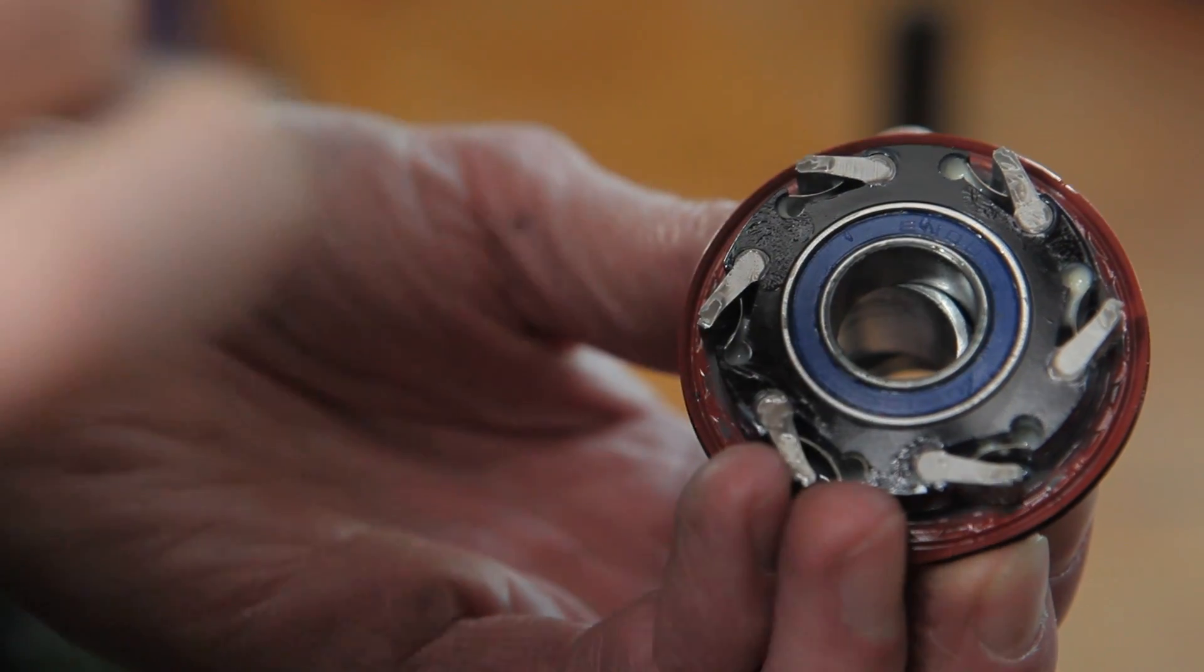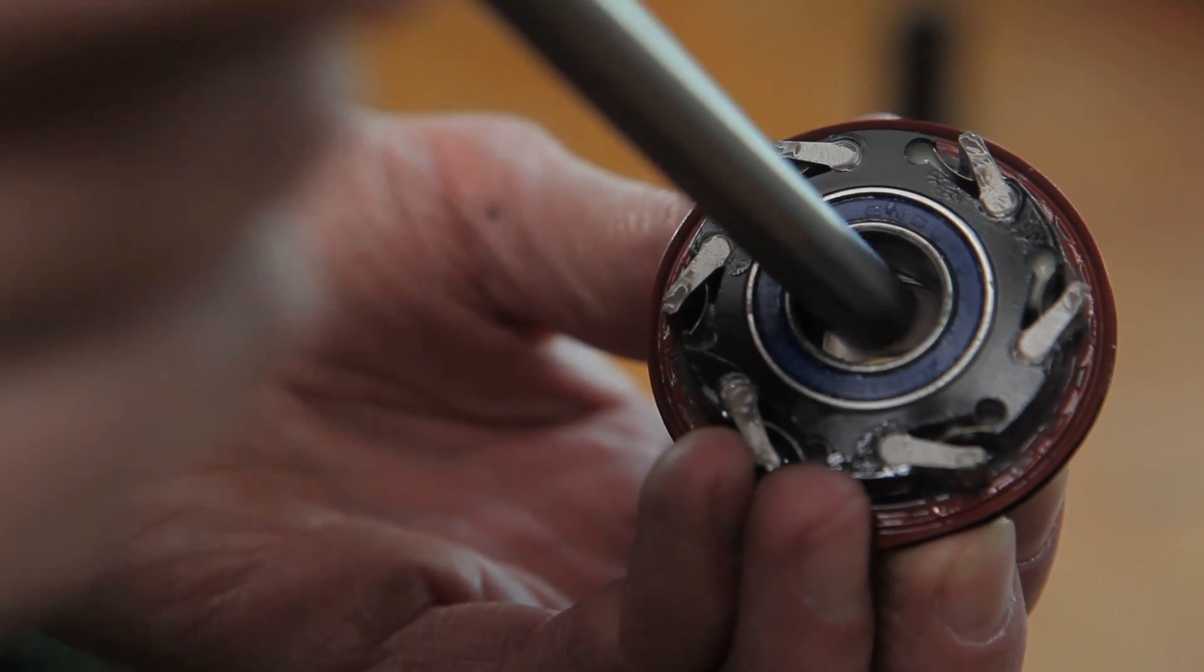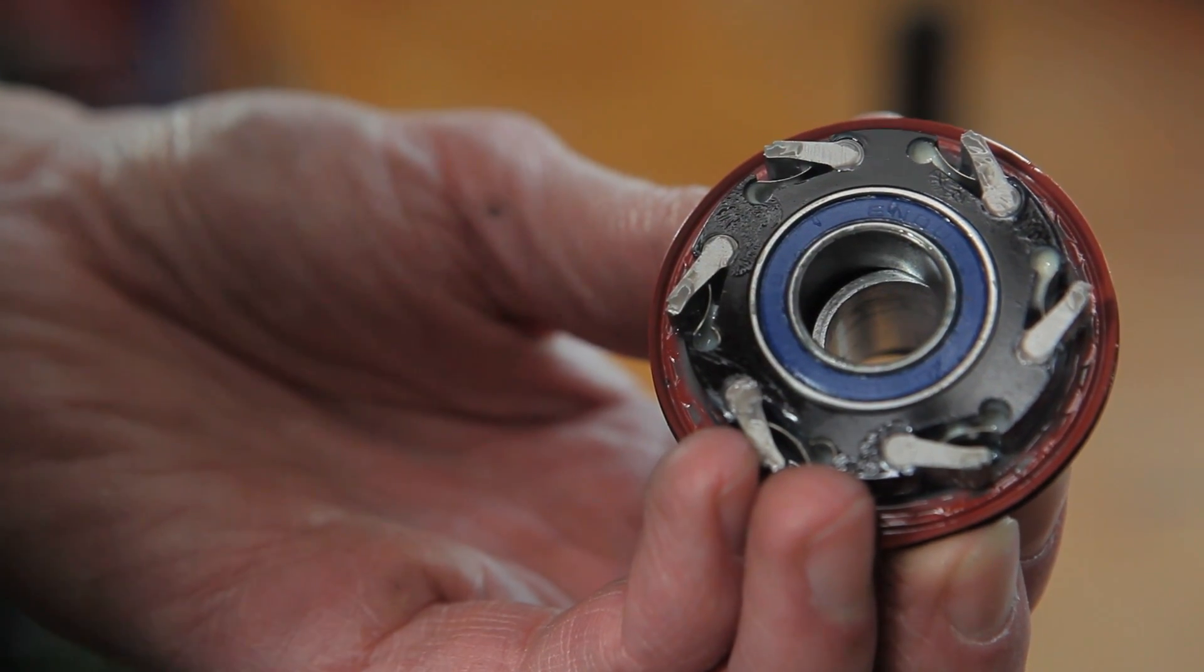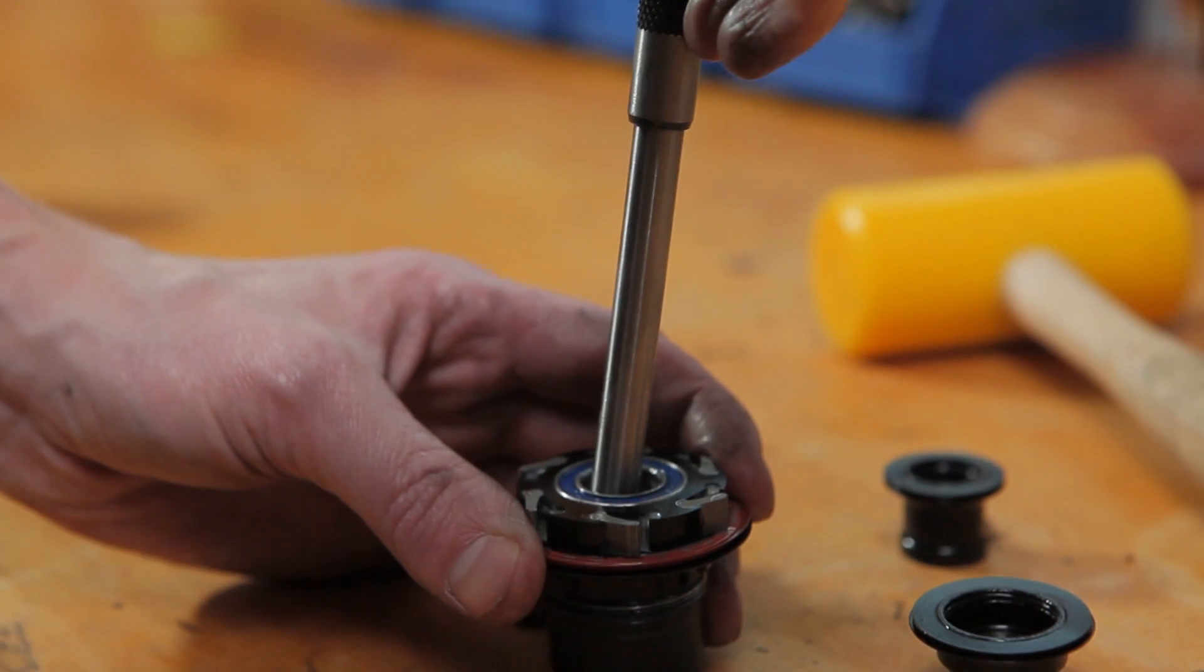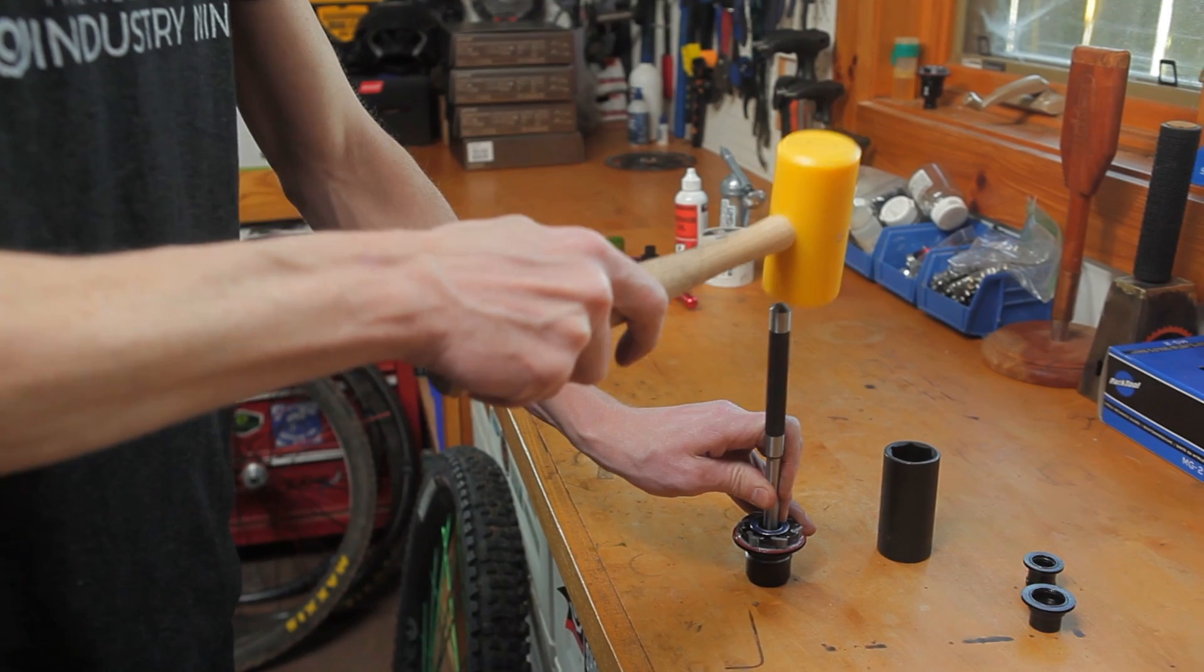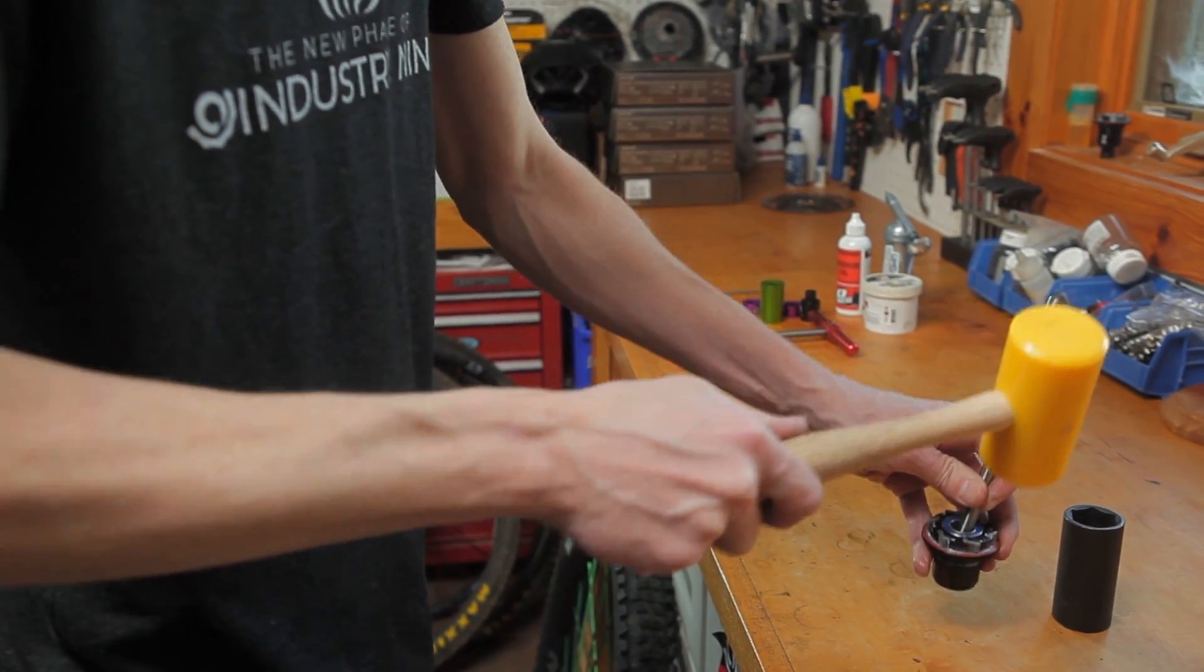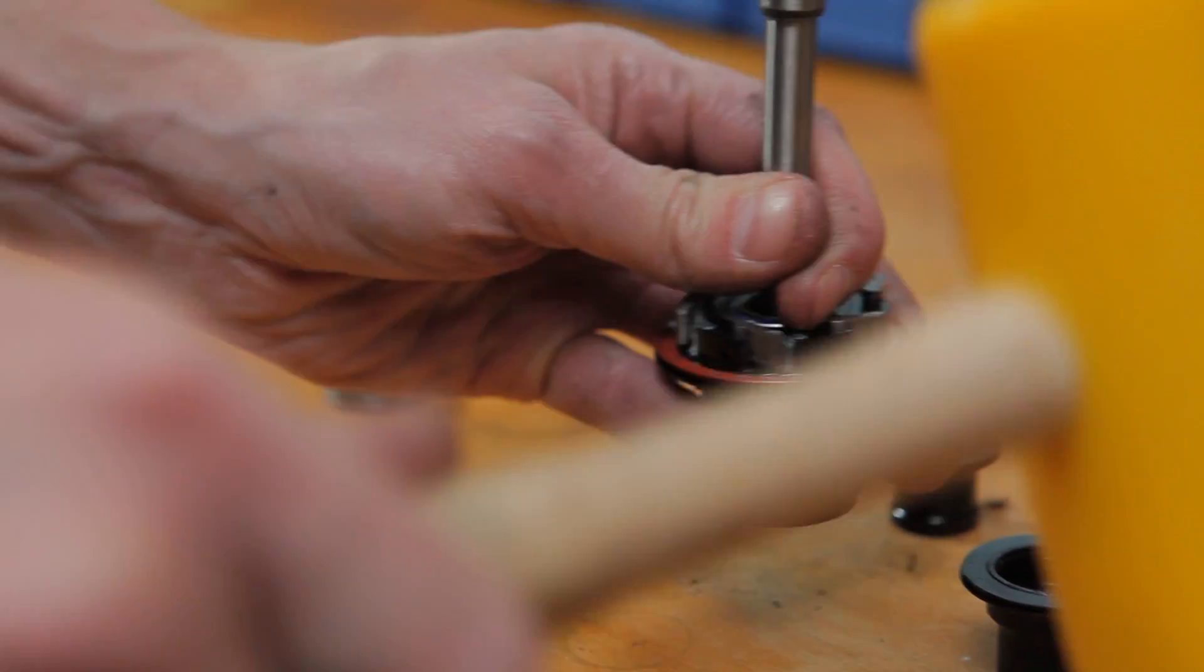You'll need a punch to remove the bearings in the freehub body. Start with the outboard bearing. Use the edge of the punch to offset the spacer in the freehub. Catch the revealed edge of the bearing with the punch. As always, move around the bearing with the punch so that you push it out as straight as possible. Once the outboard bearing is removed, the spacer will come out freely.